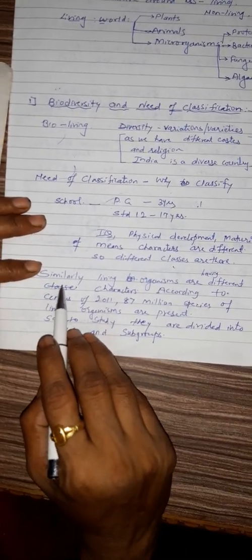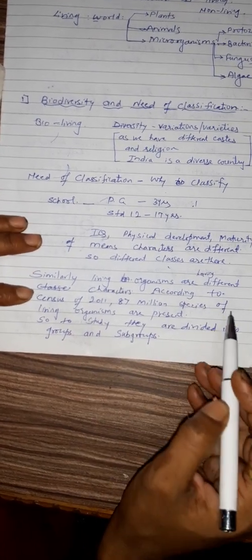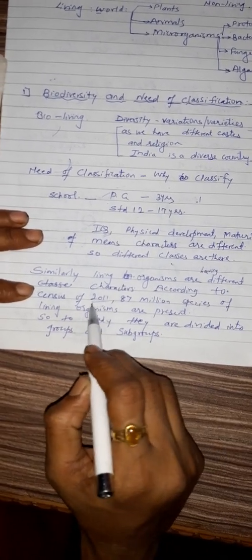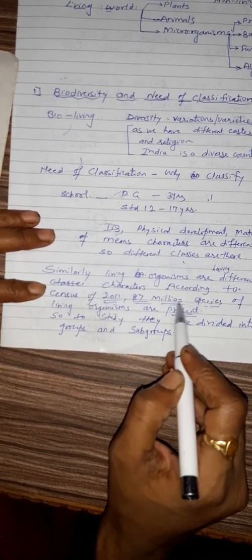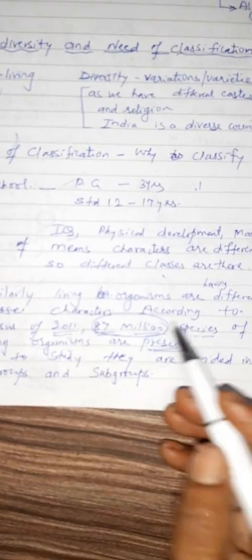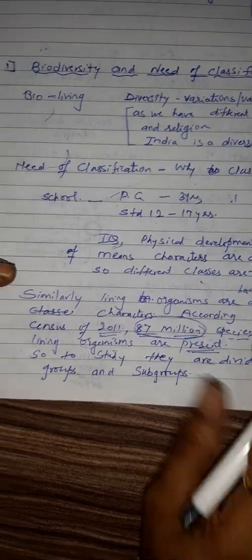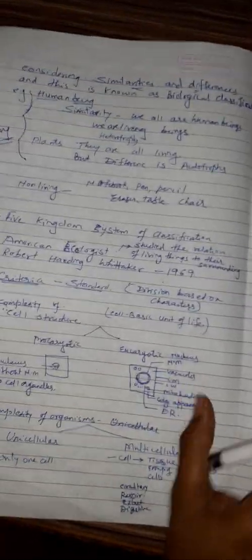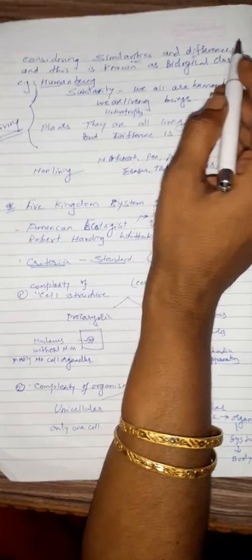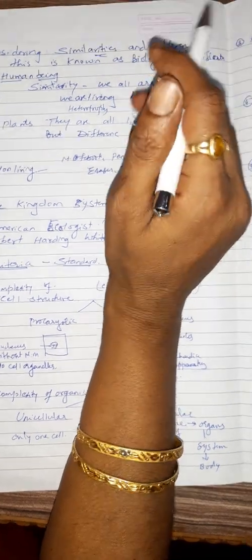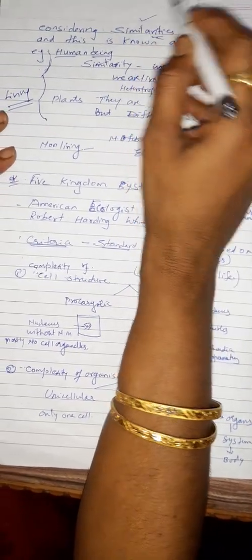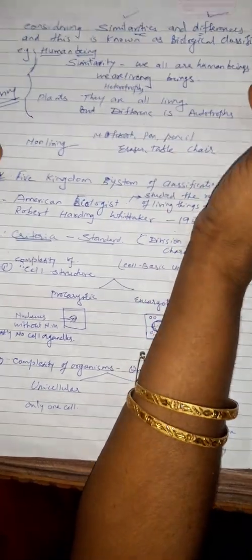Now if in living organisms there are also different characters. According to census of 2011, 87 million species of living organisms are present. So 87 million and it was in 2011. So while studying all these things there are complications. Characters of each plant, each animal are different. And so to study individually it is difficult. So they are categorized in one group. And how are that groups done? The groups are done based on the similarity and difference of that living organisms.